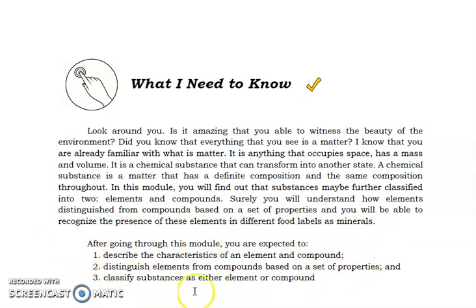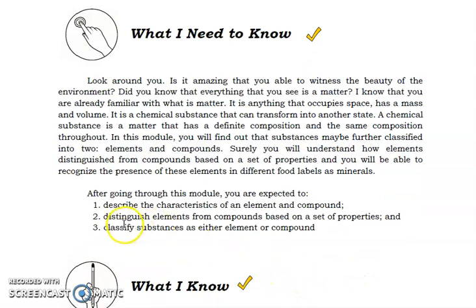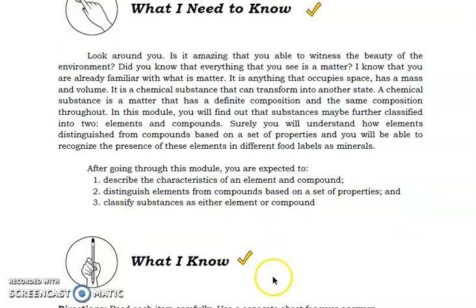We have three objectives for our lesson for today. Number one, describe the characteristics of an element and compound. Two, distinguish elements from compounds based on a set of properties. And then three, classify substances as either element or compound.